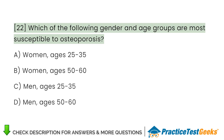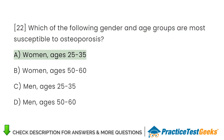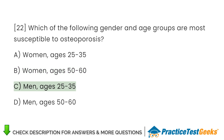Which of the following gender and age groups are most susceptible to osteoporosis? A. Women, ages 25 to 35. B. Women, ages 50 to 60. C. Men, ages 25 to 35. D. Men, ages 50 to 60.